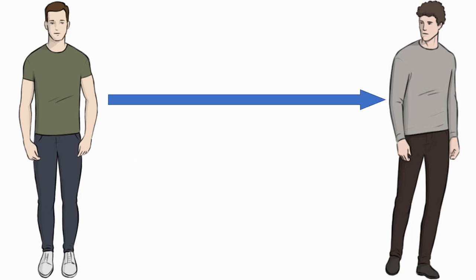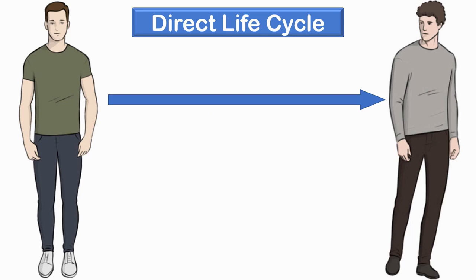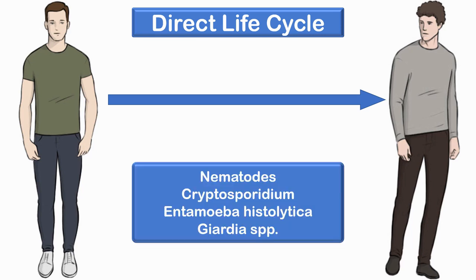In a direct life cycle, a parasite is transmitted directly from one host to the next without an intermediate host or vector of any other species — for example, nematodes, Cryptosporidium, Entamoeba histolytica, and Giardia species, which can be transmitted directly from one human to another.